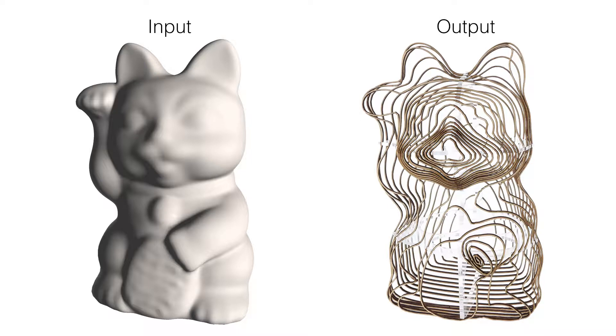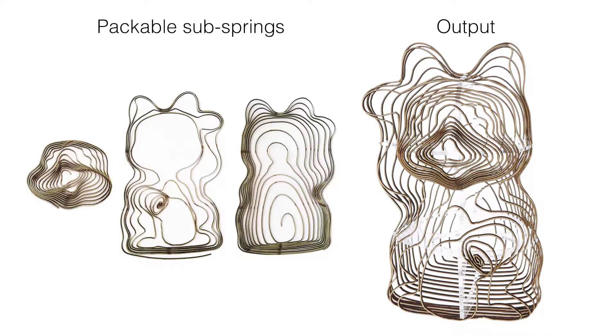Our CAD spring consists of three packable parts. A part is packable if it does not self-intersect when projected onto the XY plane, which means that we can laser cut it from a single flat material sheet.